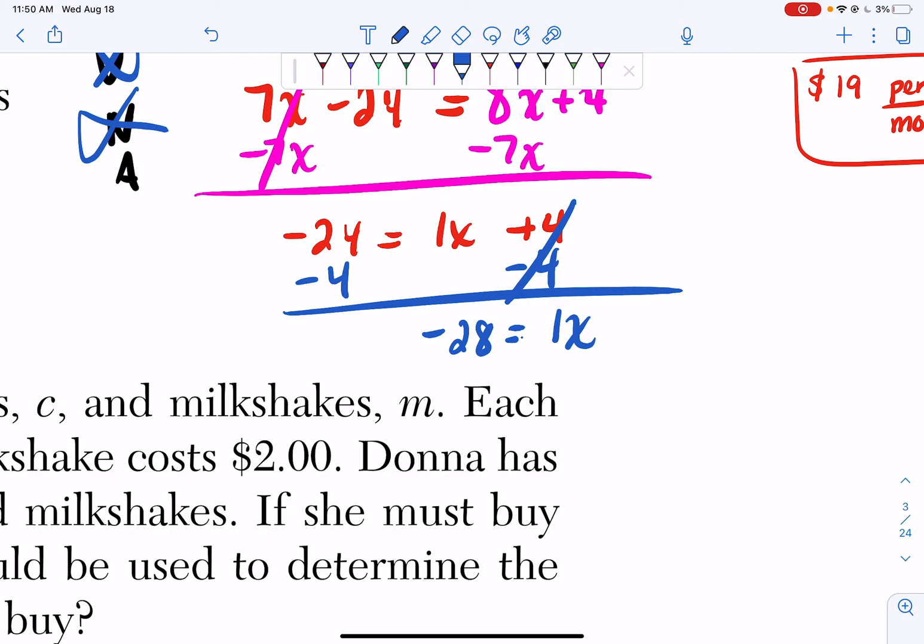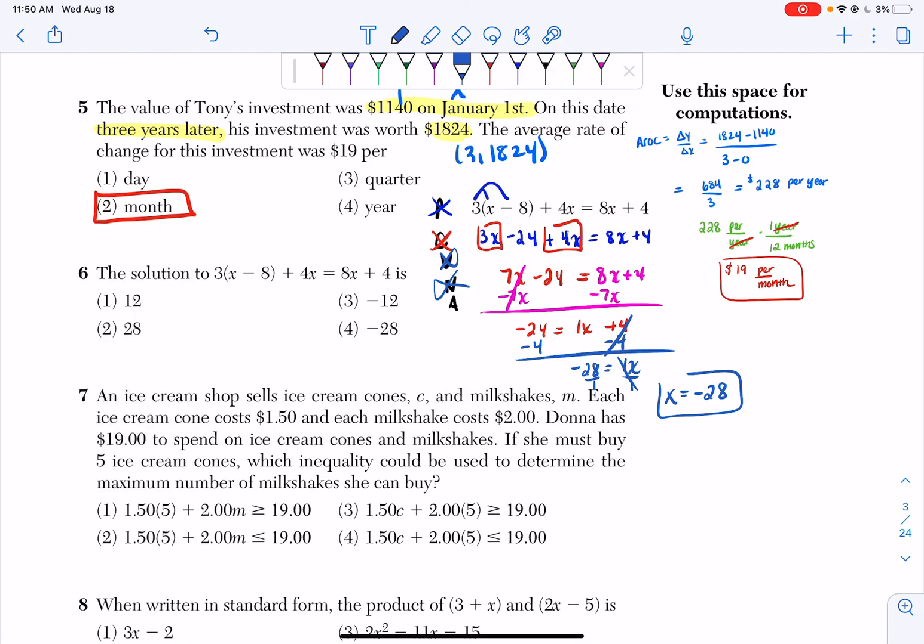Get rid of the number attached to your x by dividing. So divide by 1, divide by 1, and I get x equals negative 28. And that's your final answer.